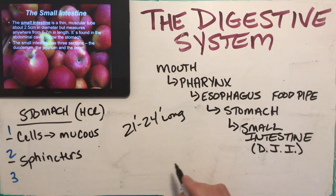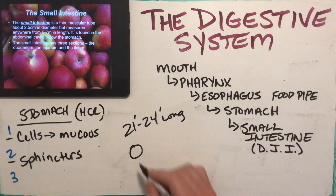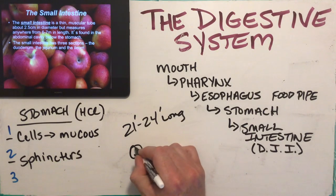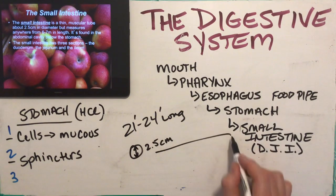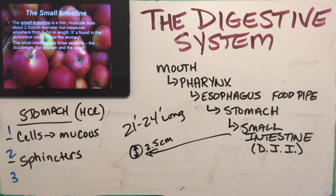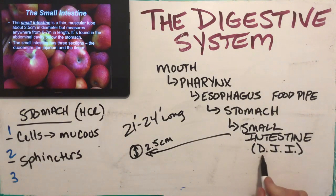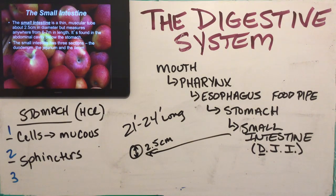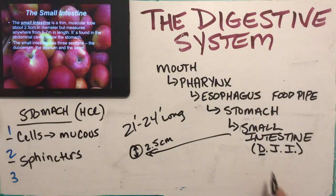The small intestine has three sections: the duodenum, the jejunum, and the ileum — in that order. Different professors pronounce 'duodenum' in different ways, and all are acceptable. Food enters from the stomach into the duodenum, then travels into the jejunum, and finally the last section is the ileum.